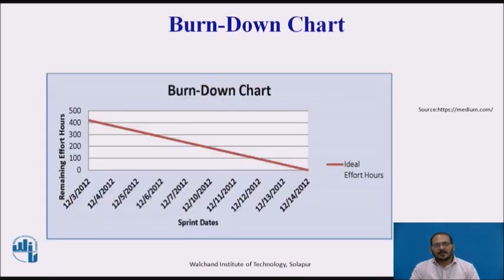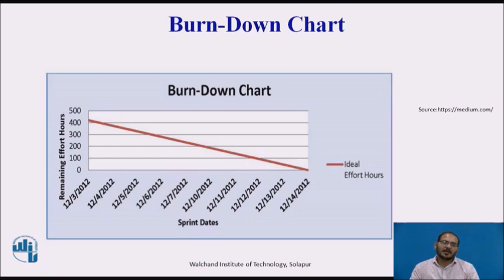We will see in detail about the burndown chart. This chart provides a graphical view of the number of stories in the backlog that have been completed against the total number remaining across the sprints. The burndown chart is used in the industry to track how much work is remaining for the project, or how many tasks are yet to be completed.